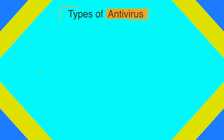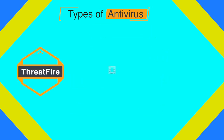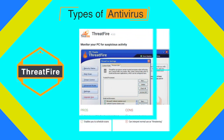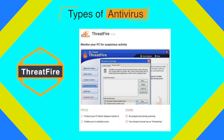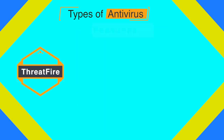The next antivirus on the list is ThreatFire Lite. It provides comprehensive protection against viruses, worms, Trojans, spyware, rootkits, keyloggers, and buffer overflows, with real-time behavior-based malware detection and malware quarantine and removal features.